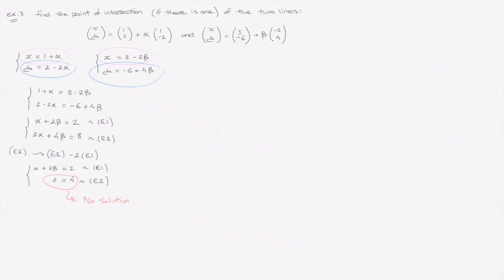And graphically what this means is that the two lines are parallel. So we write the two lines are parallel. And now, it won't always be 0 equals 4.